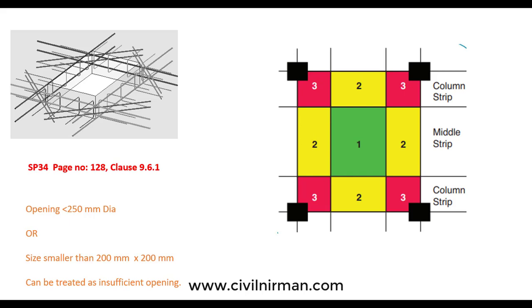If you want more details, you can check out SP34. In clause number 9.6.1, it will give you reinforcement detailing on how you can detail a slab with a cutout. One important note mentioned in SP34: if you have an opening less than 250 mm diameter or sizes smaller than 200 mm by 200 mm, it can be treated as an insufficient opening.